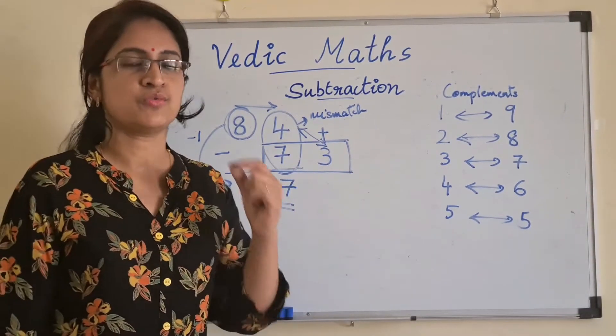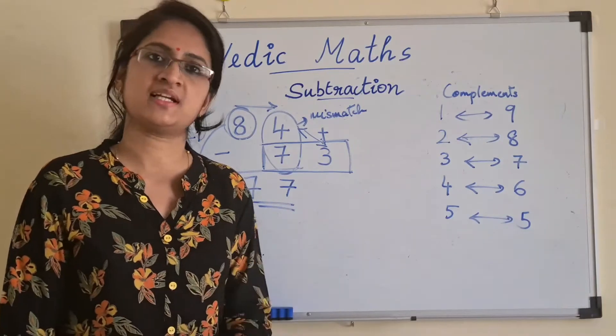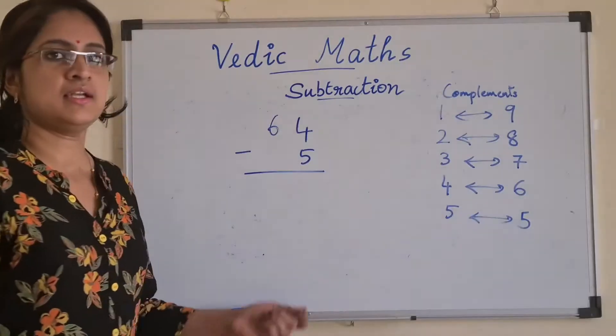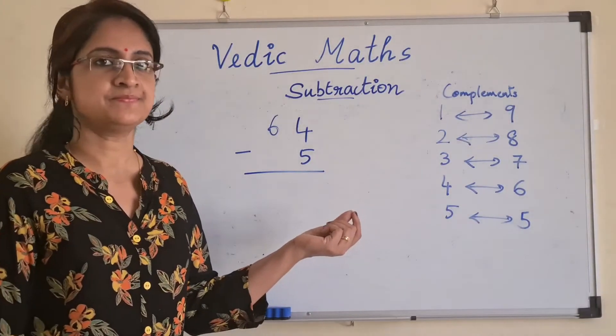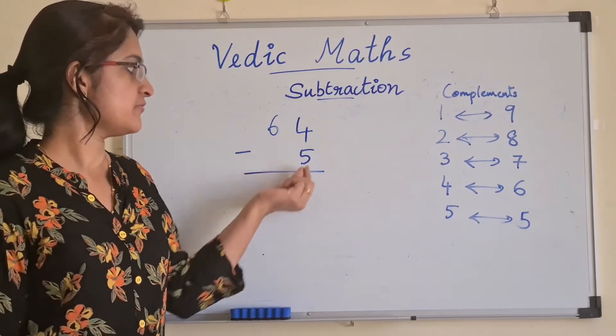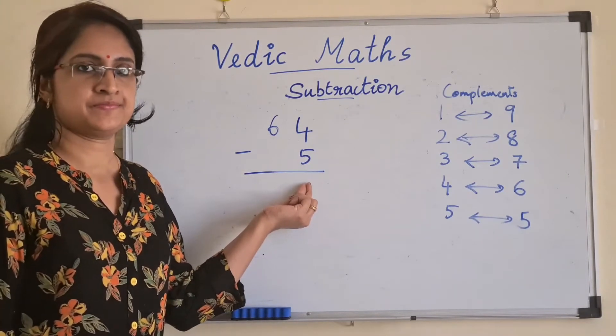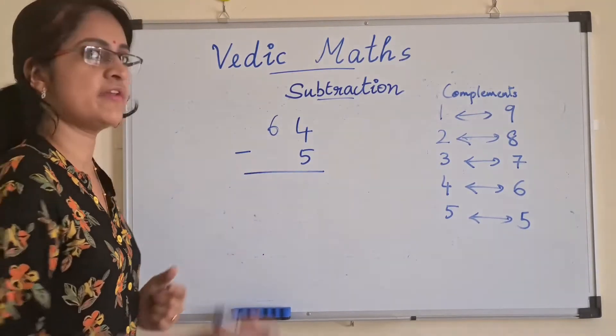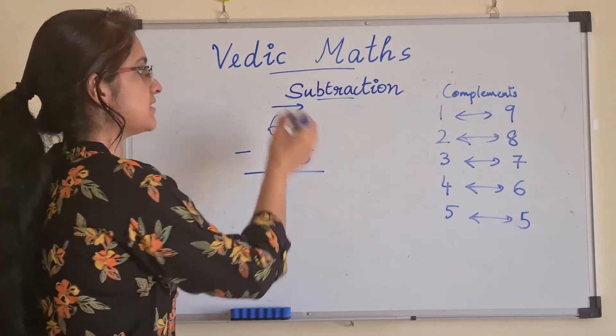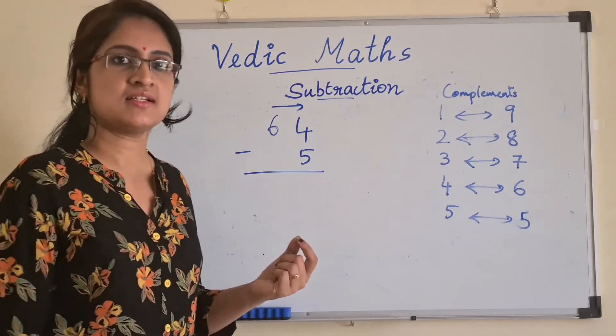I will show you one more example. Let's see another example, which is 64 minus 5. When we move from left to right, the first digit we take is 6.